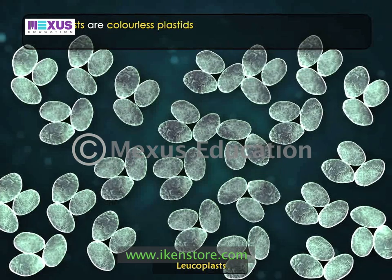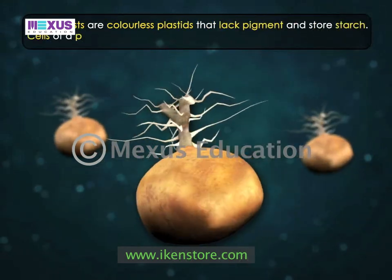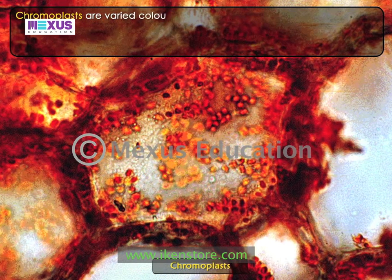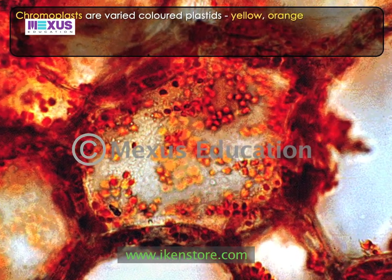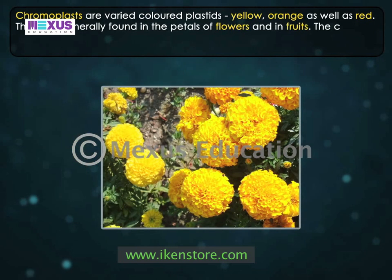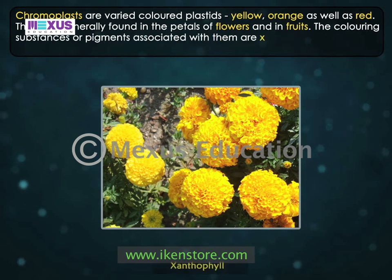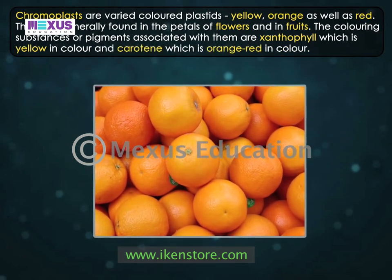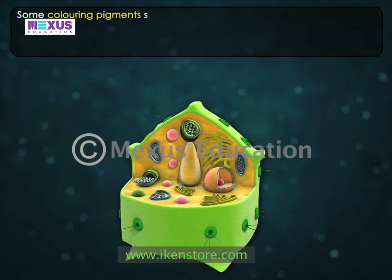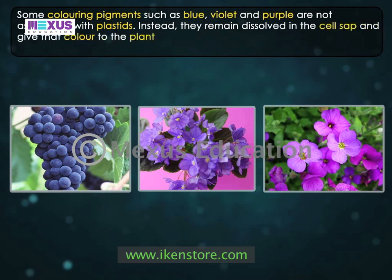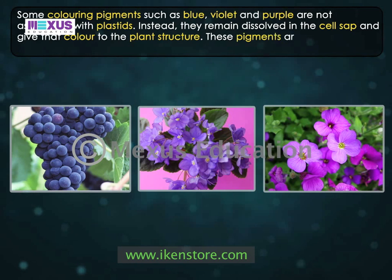Leucoplasts are colorless plastids that lack pigment and store starch. Cells of a potato have lots of leucoplasts in them. Chromoplasts are varied colored plastids — yellow, orange, as well as red. They are generally found in the petals of flowers and in fruits. The coloring substances or pigments associated with them are xanthophyll, which is yellow in color, and carotene, which is orange-red in color. Some coloring pigments, such as blue, violet, and purple, are not associated with plastids. Instead, they remain dissolved in the cell sap and give that color to the plant's structure. These pigments are called anthocyanins.